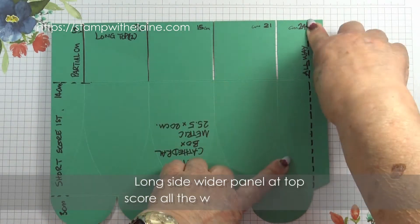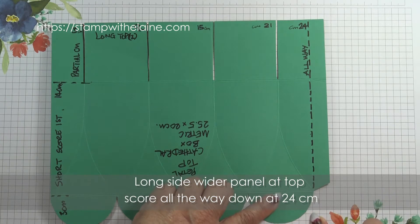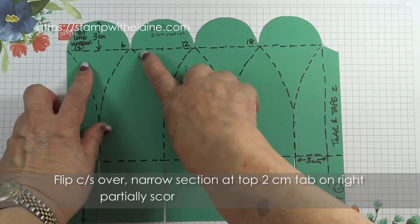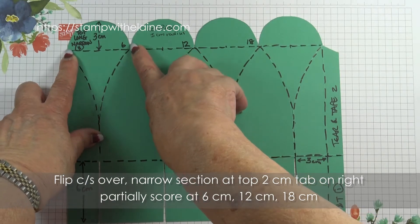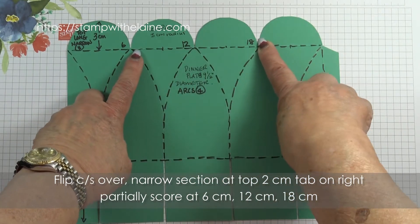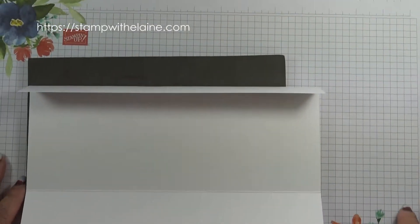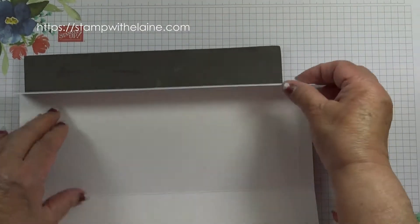And then all the way down at 24 down to the bottom. Now flip your cardstock over. And you want to score at six, twelve and eighteen. I'm just going to fold this a little bit so you can see the score lines a bit better.